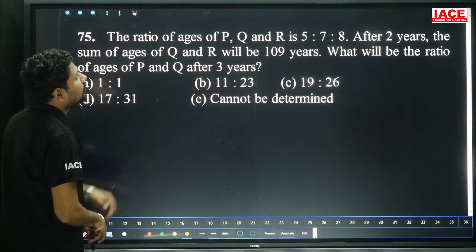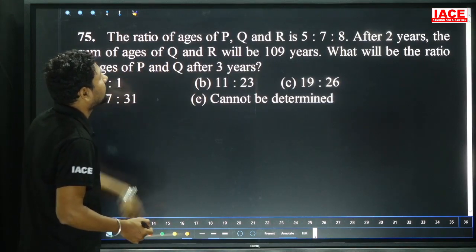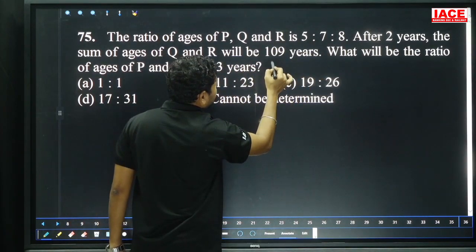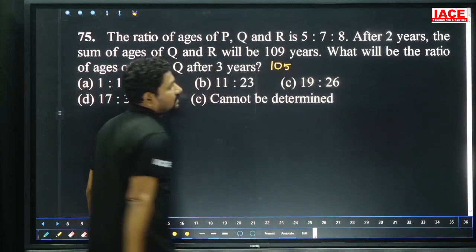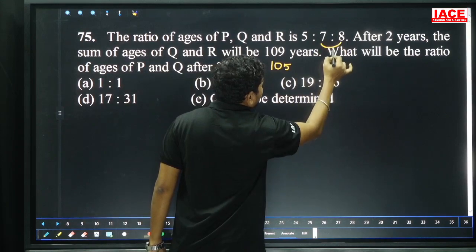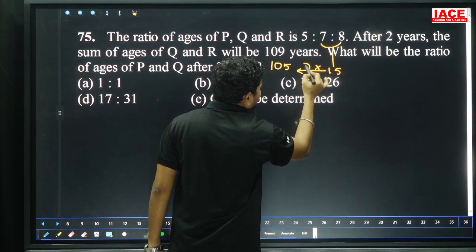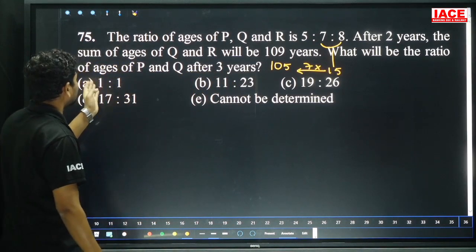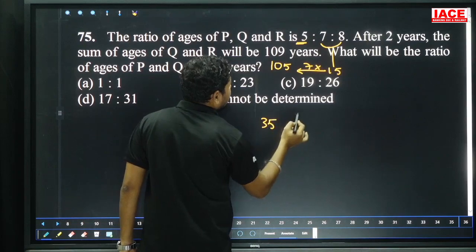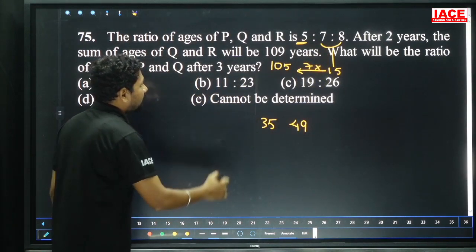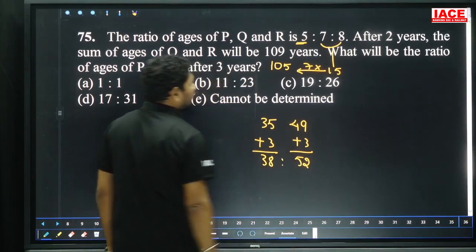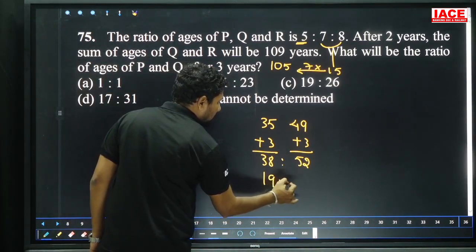The ratio of ages of P, Q, R is 5:7:8. After 2 years, the sum of ages of Q and R will be 109 years. Present sum of Q and R = 109 − 4 = 105. Q + R = 7+8 = 15 parts = 105, so 1 part = 7. P = 5×7 = 35, Q = 7×7 = 49. After 3 years: P = 38, Q = 52. Ratio = 38:52 = 19:26. Option C.